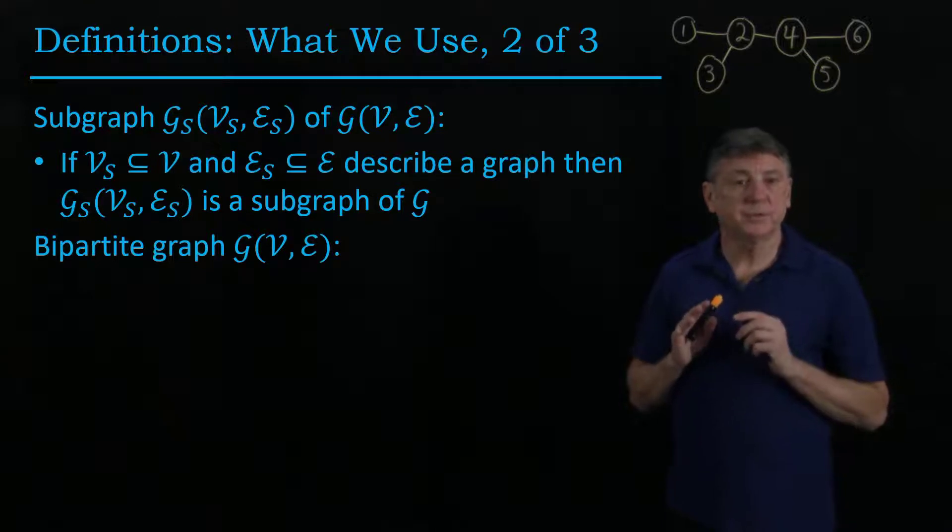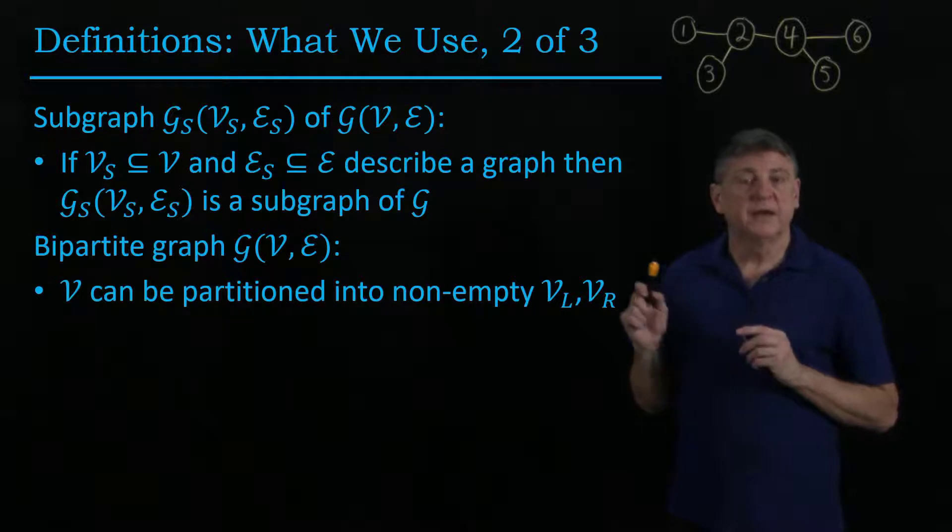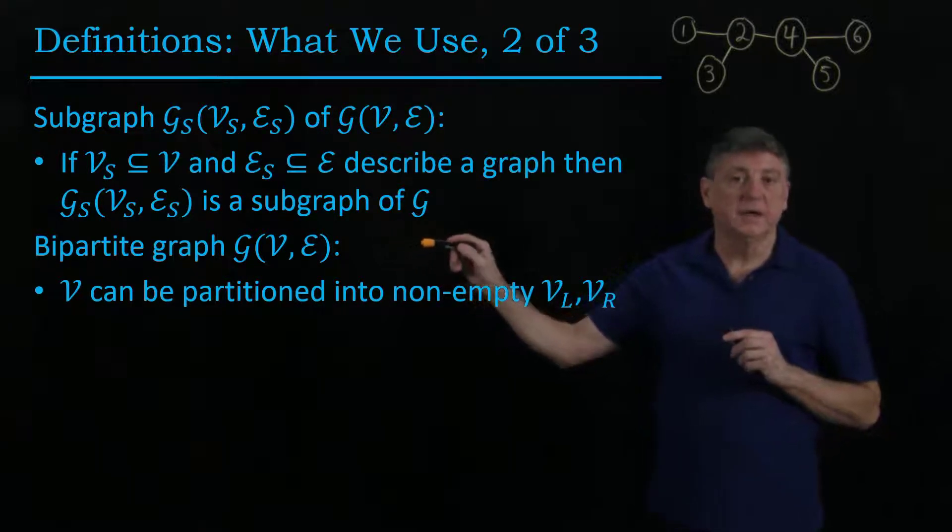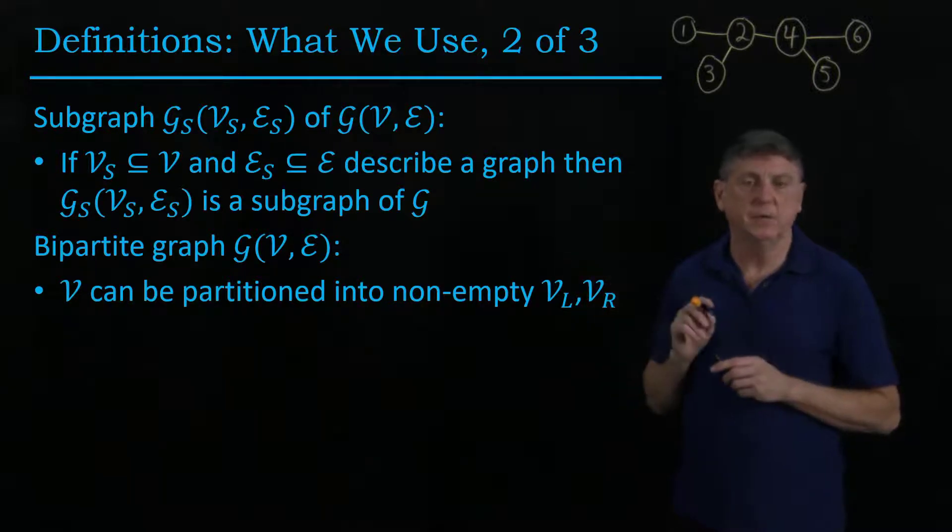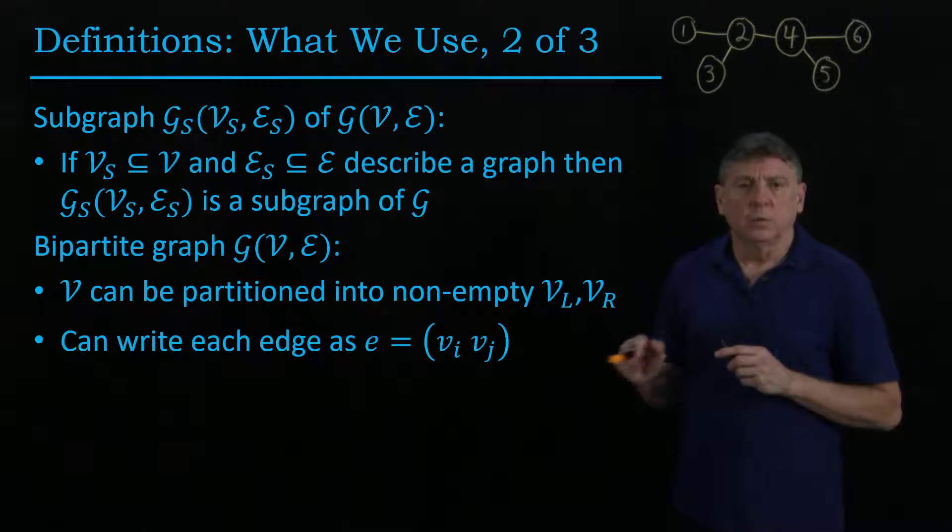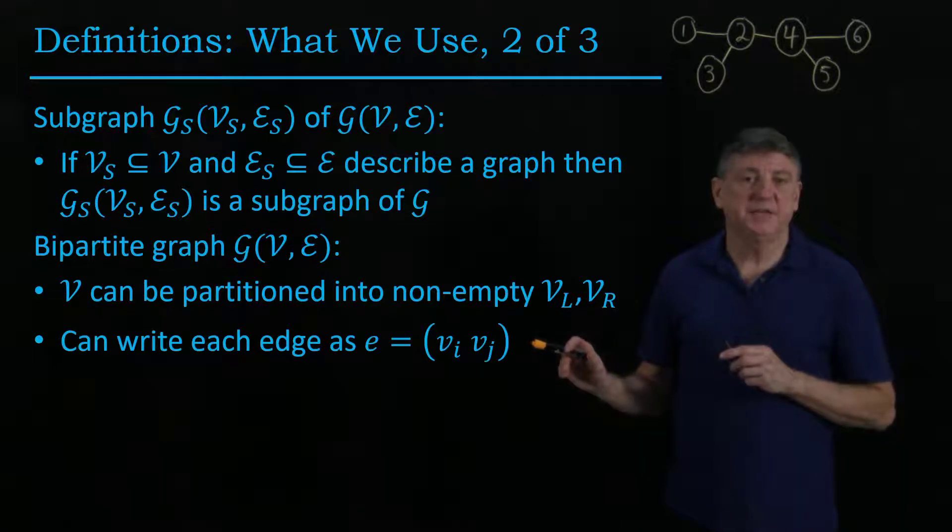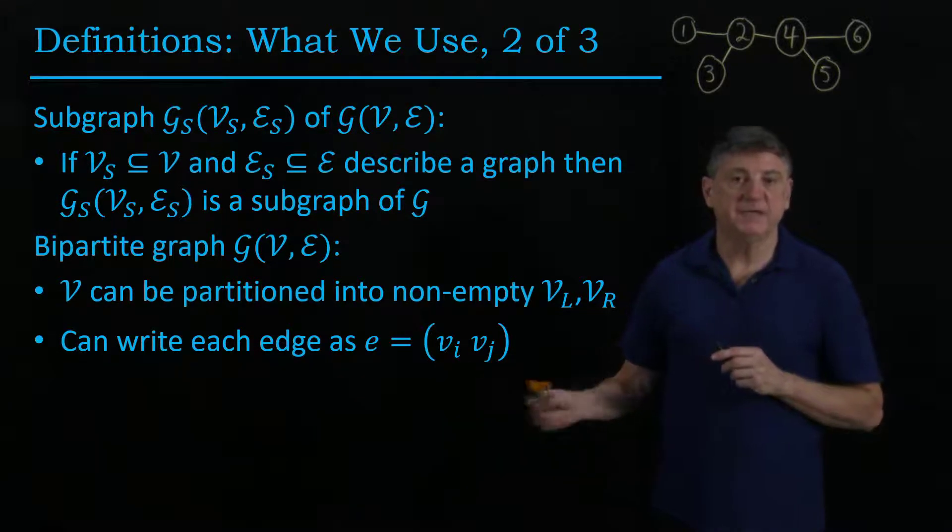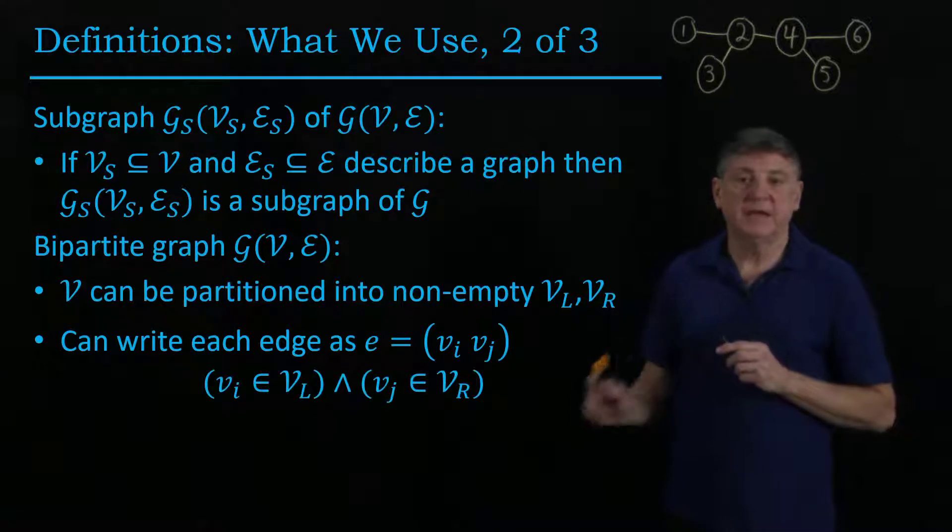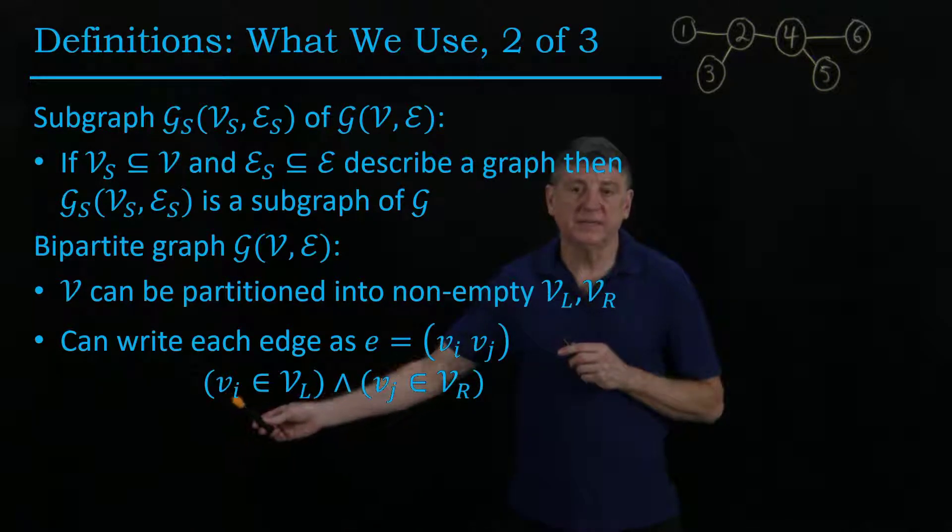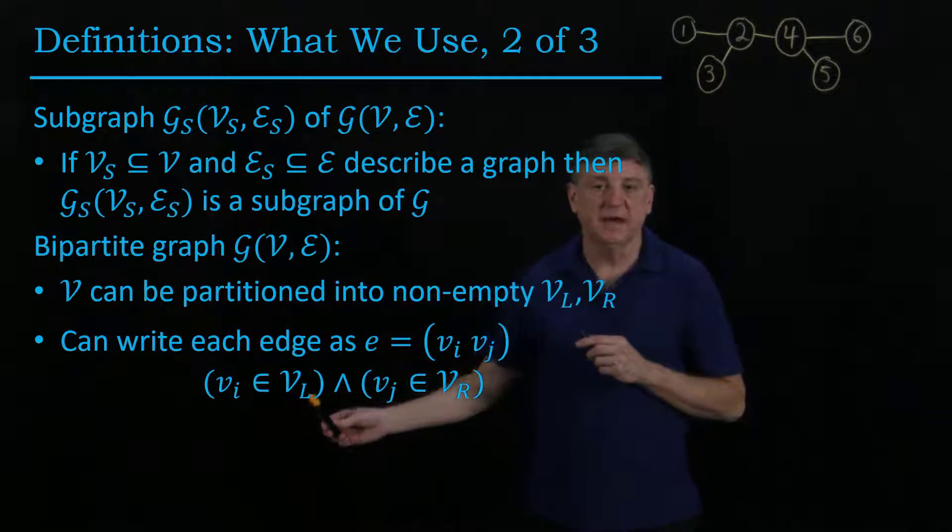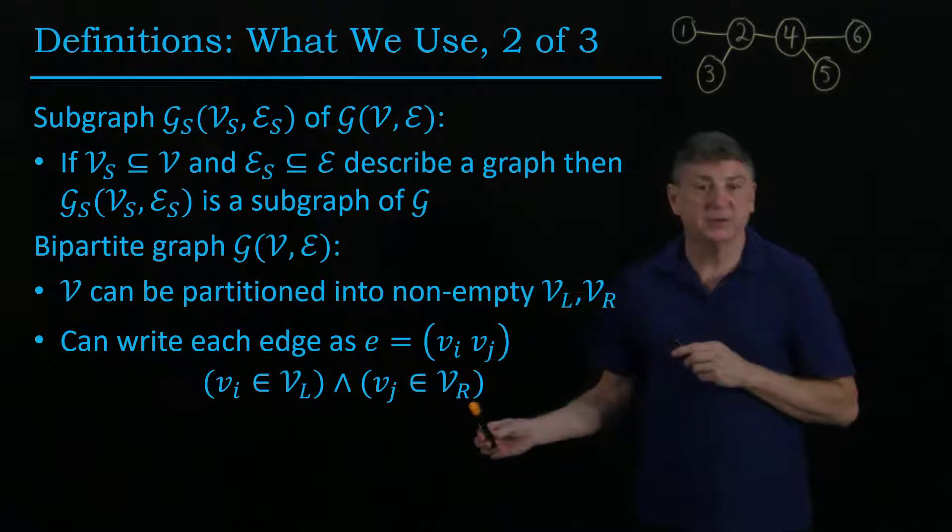A bipartite graph is a particularly useful structure in computer science. So we'll say that a graph is bipartite, which means that we can partition its vertices into two non-empty sets, and we'll refer to these as left and right for now. And we can write each edge as having vi and vj with a specific requirement, and that is that one of the vertices has to be in the left set, and the other vertex has to be in the right set.